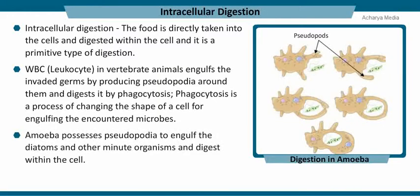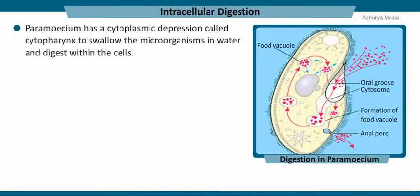Amoeba, a unicellular animalcule, possesses pseudopodia to engulf diatoms and other minute organisms and digest them within the cell. Protozoans such as paramecium swallow microorganisms in water with the help of a cytoplasmic depression called the cytopharynx, and digest them within the cells.